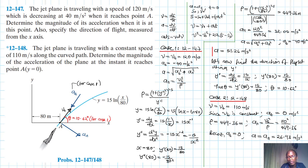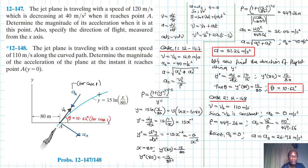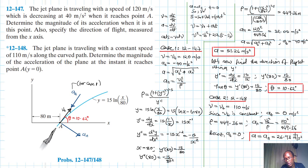To summarize the solutions: in Case 1, the magnitude of acceleration is 51.26 meters per second squared, and the direction of flight is 10.62 degrees. In Case 2, the acceleration is due only to the normal centripetal acceleration, giving 26.93 meters per second squared. I hope this video was helpful. If it was, give a thumbs up, like, and subscribe to the channel. Bye!